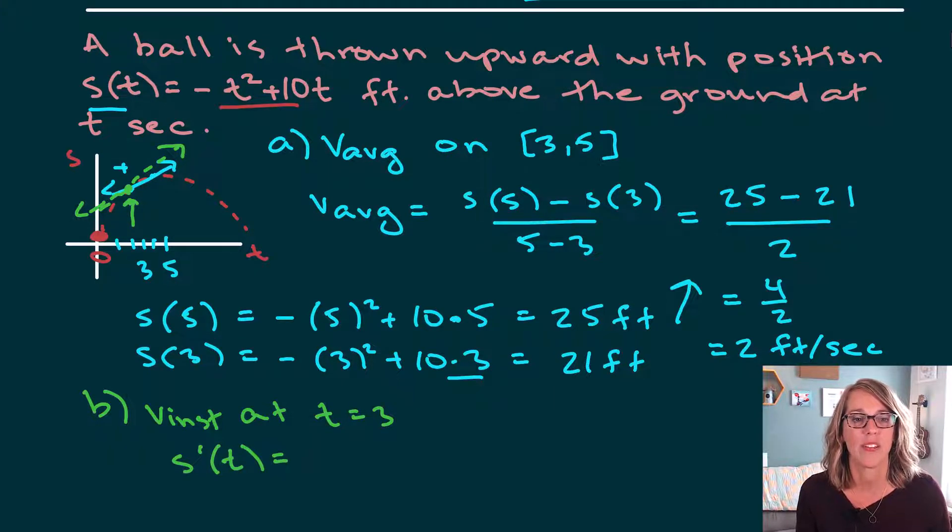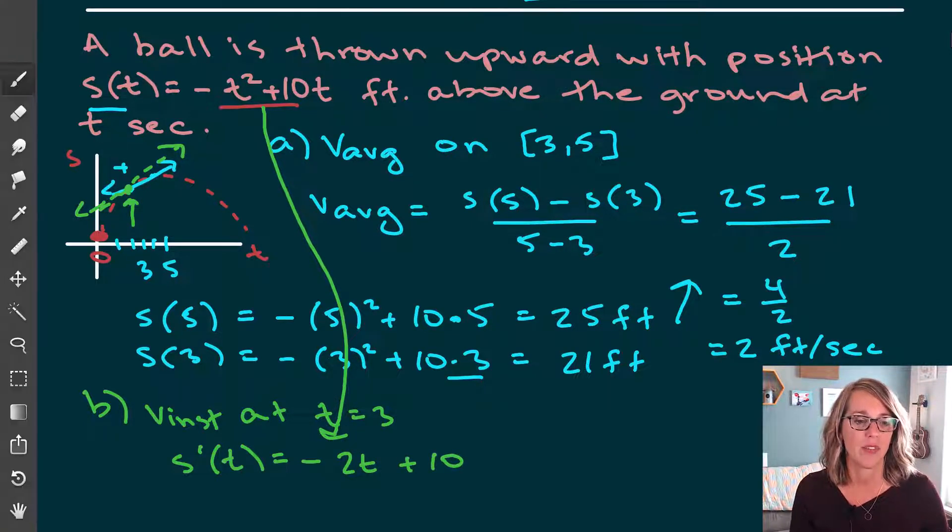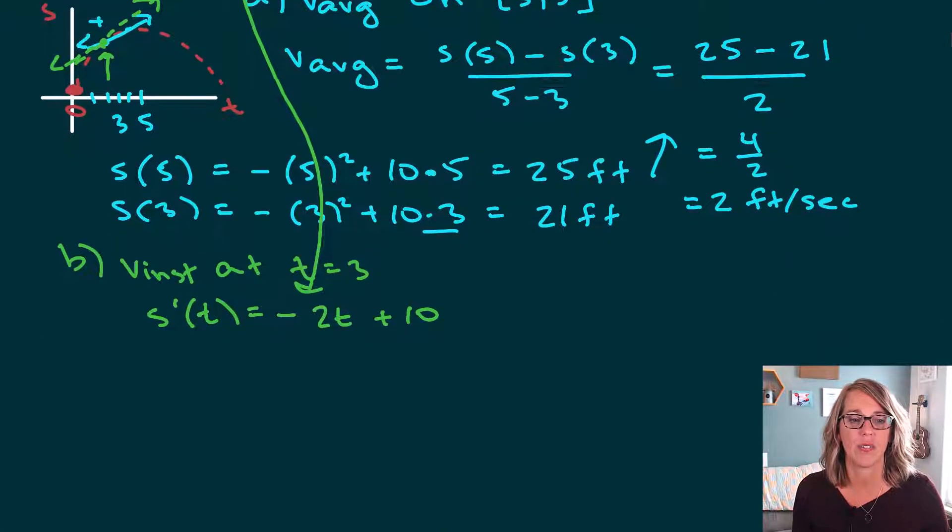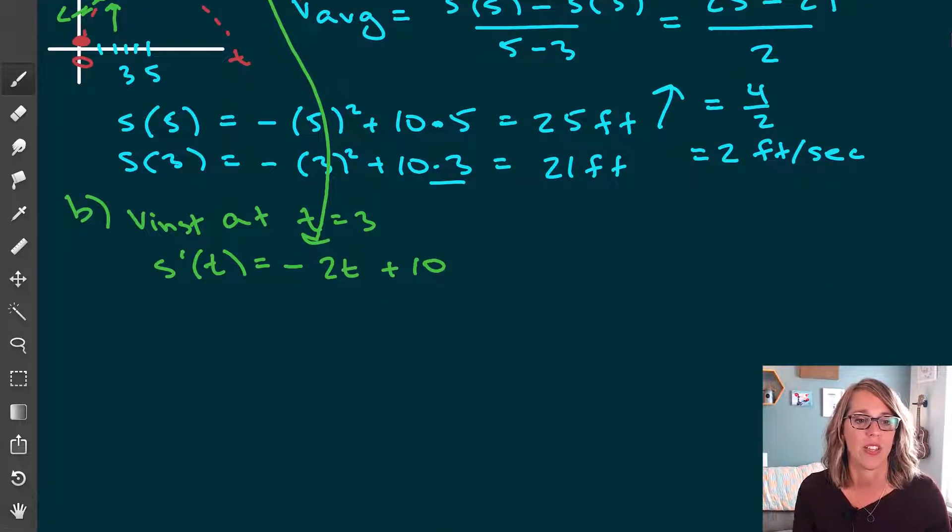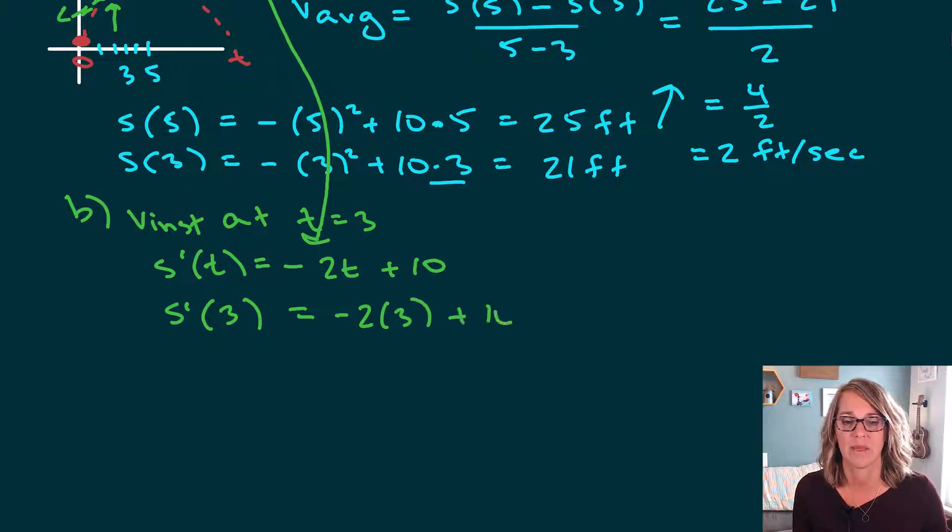So I need to find the derivative first of my function. So I'm looking for the derivative of that function. And as I take the derivative, negative t squared, its derivative is negative two t. The derivative of 10 t is equal to 10. So I've got my derivative there. Now I just need to plug in three. So I've got s prime of three, which is my instantaneous velocity. That's going to be negative two times three plus 10.